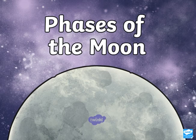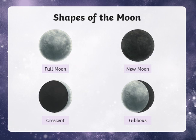Now we are moving to another object that can be found in the solar system, which is the moon. We are going to talk about the phases of the moon, the shapes of the moon, and tides regarding the moon. Starting off with this lesson, we are going to be talking about the shapes of the moon. We have four shapes: full moon, new moon, crescent, and gibbous.